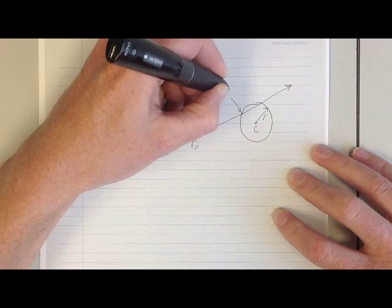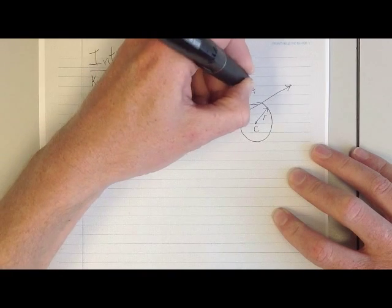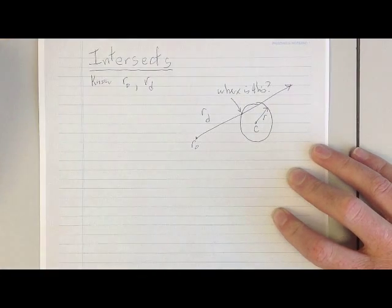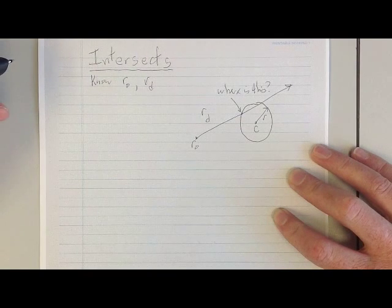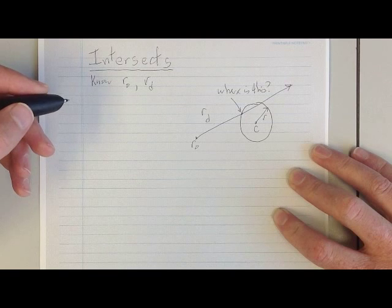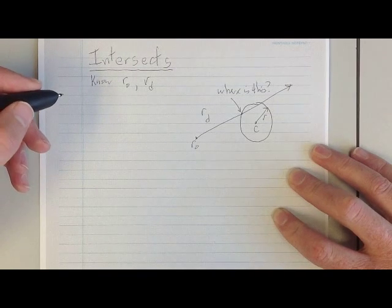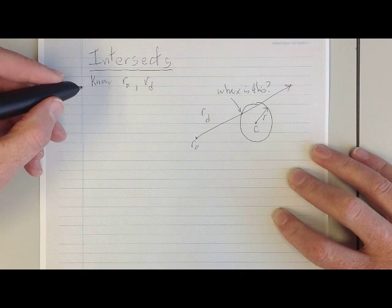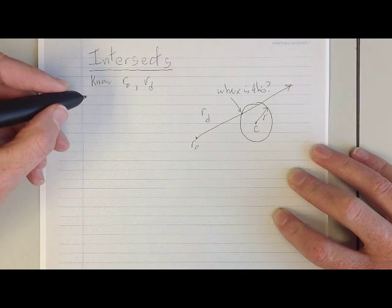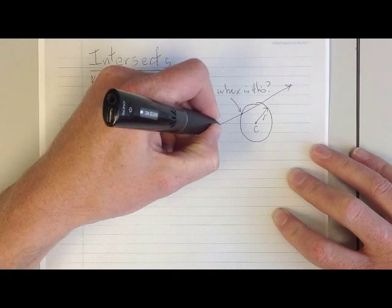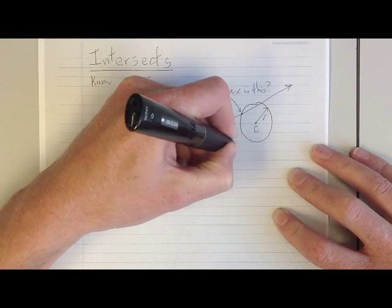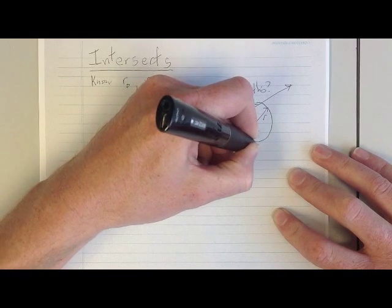The ray direction is the direction the ray is going, and the ray origin is where the ray started. What you want to figure out is where the intersection is, if there is an intersection. Your intersection calculation code will need to check for whether or not an intersection exists, and if it does, figure out where that intersection is.